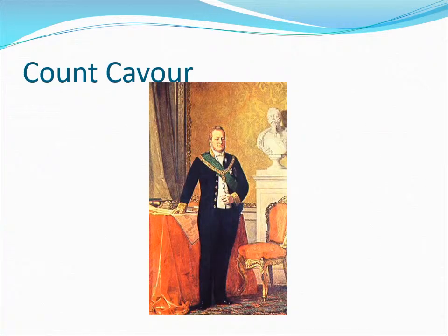Count Cavour was an aristocratic member of the nobility responsible for ultimately unifying Italy. He had liberal leanings and was interested in tax and social reform, and also in improving business in Italy. In the 1850s, Piedmont-Sardinia had a constitutional monarchy. Cavour looked for ways to extend control over other Italian territories, deciding to make Piedmont-Sardinia the model — this perfect state that all the others would want to be part of.